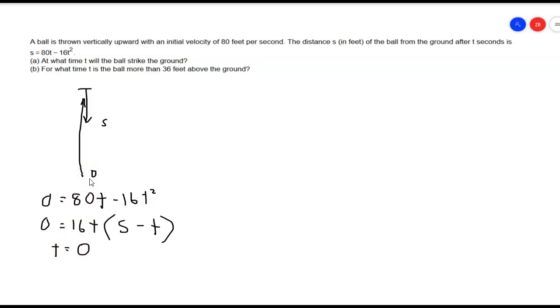First I'm going to let 16t equal to 0. That'll just give me t equal to 0, but we know that that's the initial point when we're throwing it up, because that's where we're starting from.